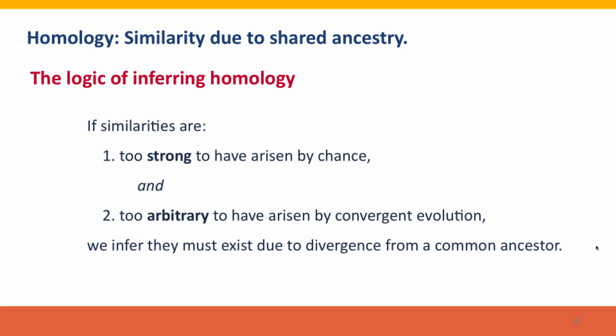How do we decide whether similarity is really due to shared ancestry? The answer is it's not always obvious, but usually we have a lot of other information. The general principles are: if the similarities are so strong that they couldn't have arisen by chance — for instance, the similarity between the aniridia gene and the eyeless gene — and they're too arbitrary to have arisen by convergent evolution, meaning the similarities extend to features that would not be acted on by natural selection, then we infer that these similarities must have arisen because of divergence from a common ancestor, and they must be due to homology.